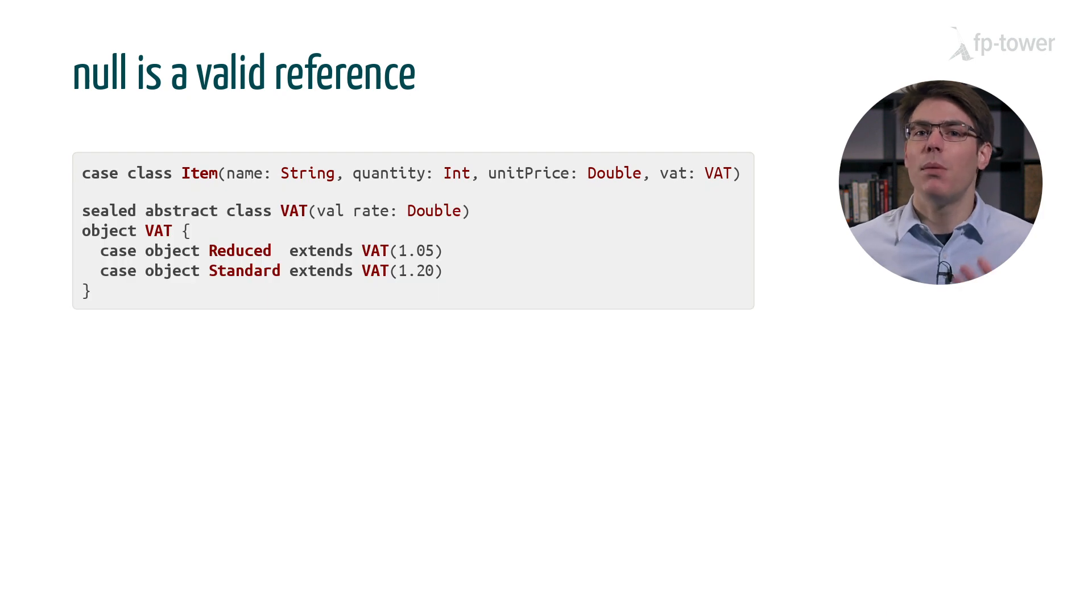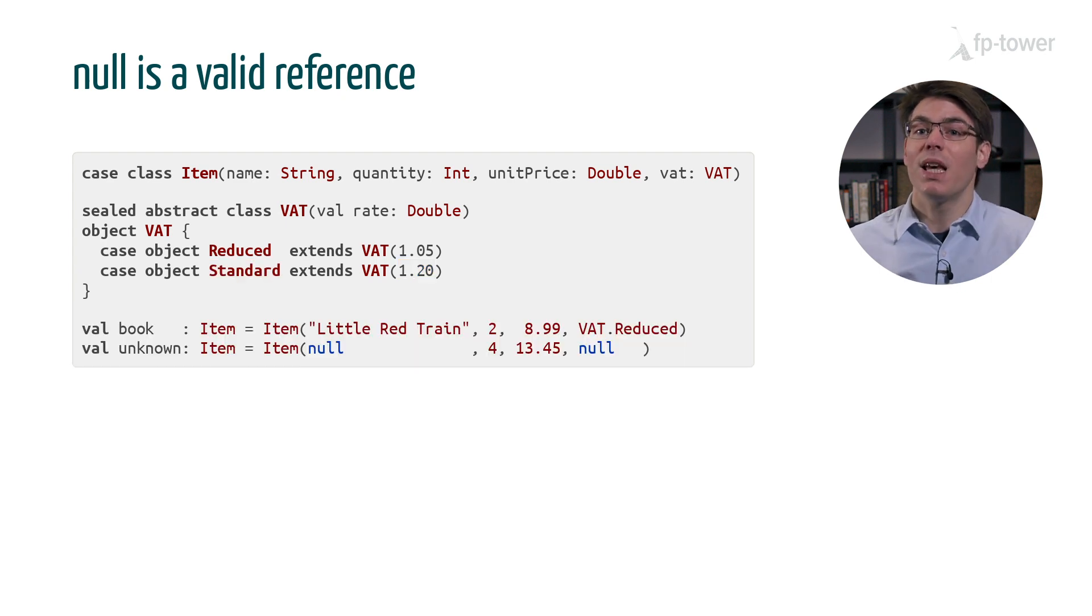VAT represents the percentage of VAT that is applied to the item. It's an enumeration with only two possible values: either Reduced where the VAT is 5%, or Standard where the VAT is 20%. We can then create a couple of values of type Item using the constructor of the class.